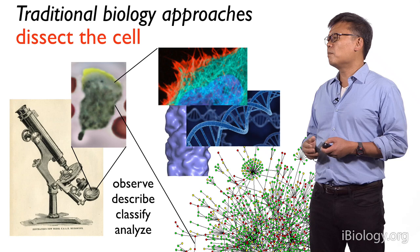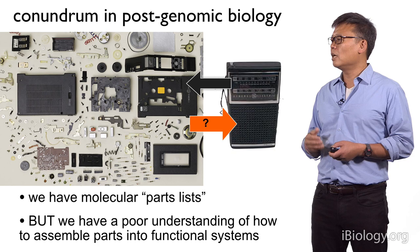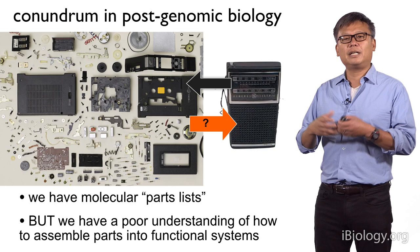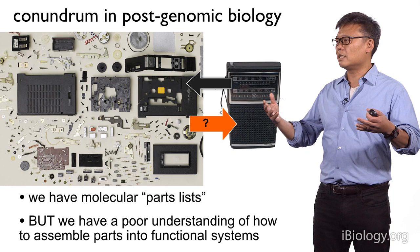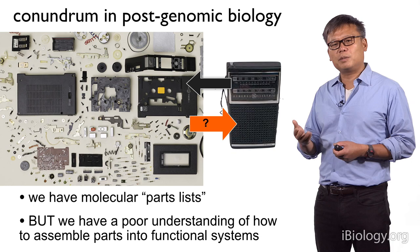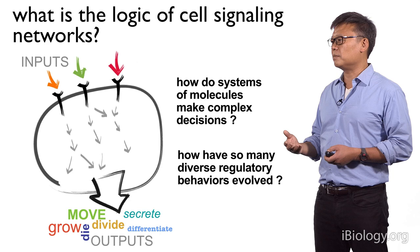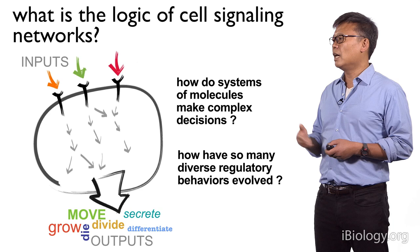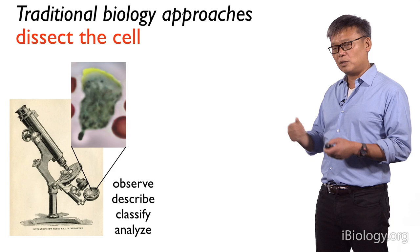One of the problems we have in today's post-genomic era of biology is the fact that these approaches really help us take a complex system and take it apart — essentially like taking something like a radio and disassembling it. What results is that we now often have a really detailed and complete molecular parts list, but we still have a relatively poor understanding of how one can assemble these parts into functional systems.